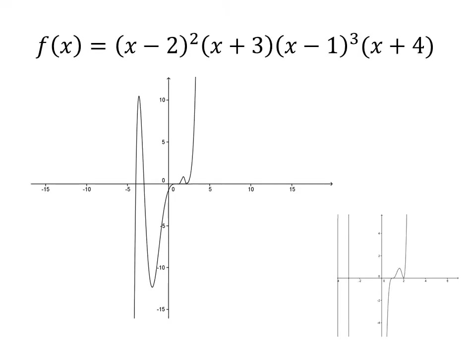Here is a sketch of that polynomial. Since the multiplicity at 2 is even, the graph bounces there. Since the multiplicities at all the other zeros are odd, the graph goes through the x-axis at those points. This is just a sketch — it's not completely accurate. If you were to graph it completely, it would look like the image in the right-hand corner. The function is extremely steep between negative 3 and negative 4, and the turning point there is actually way higher than 10.